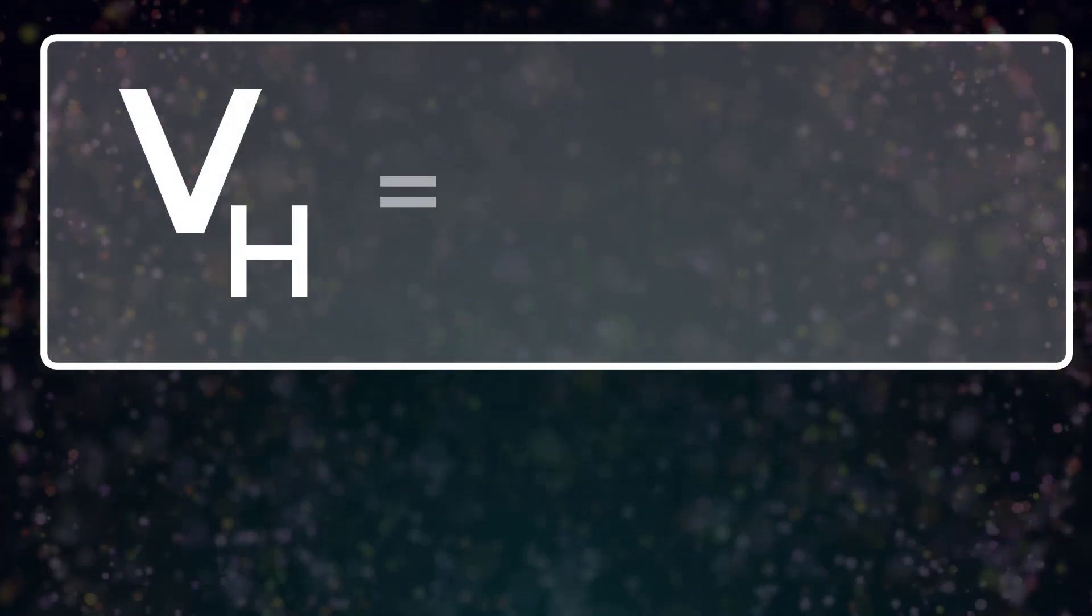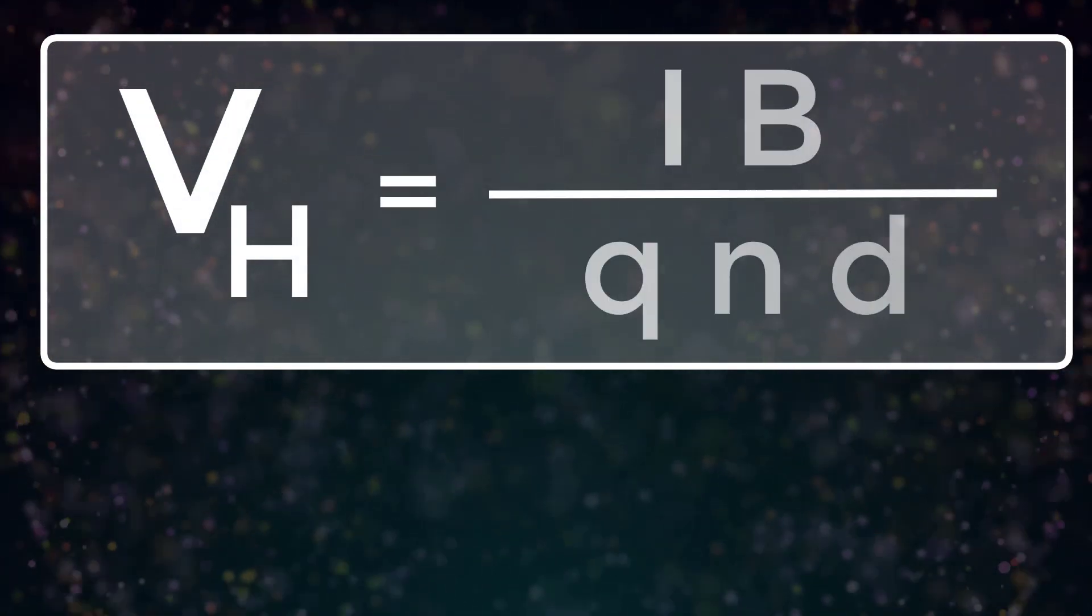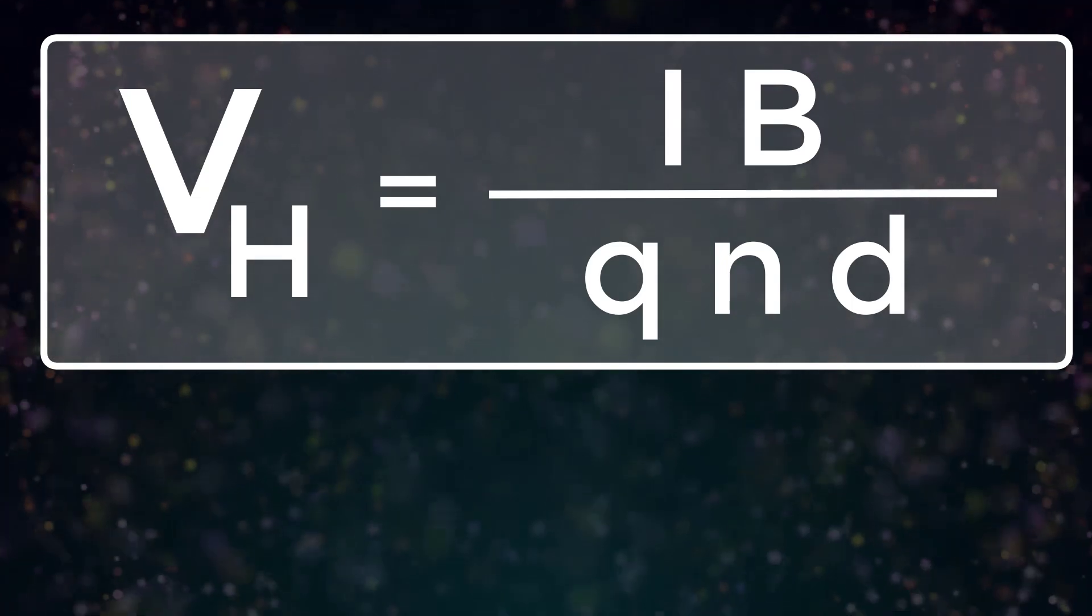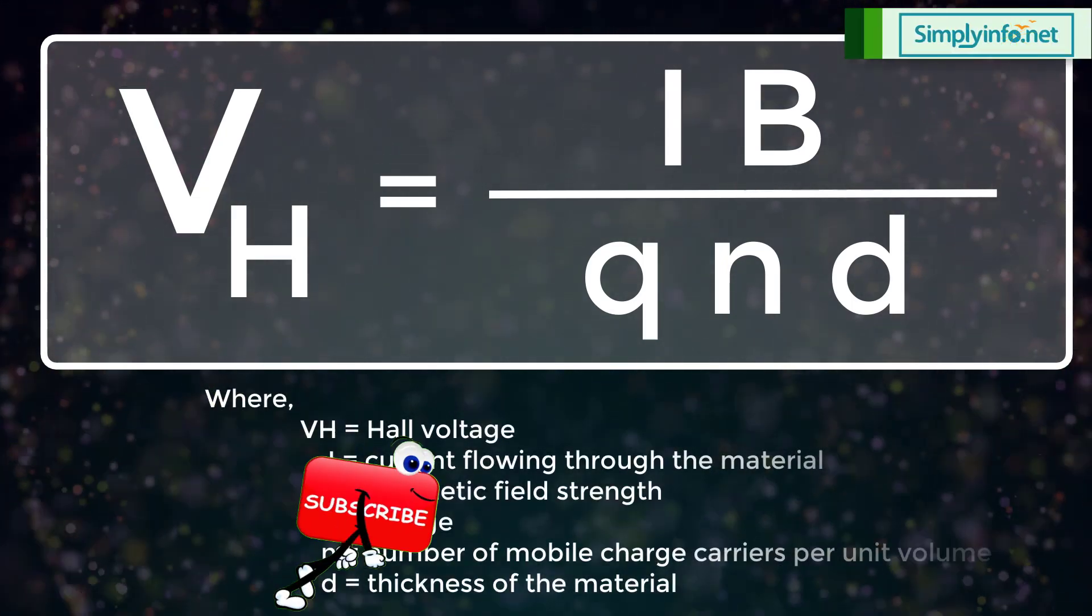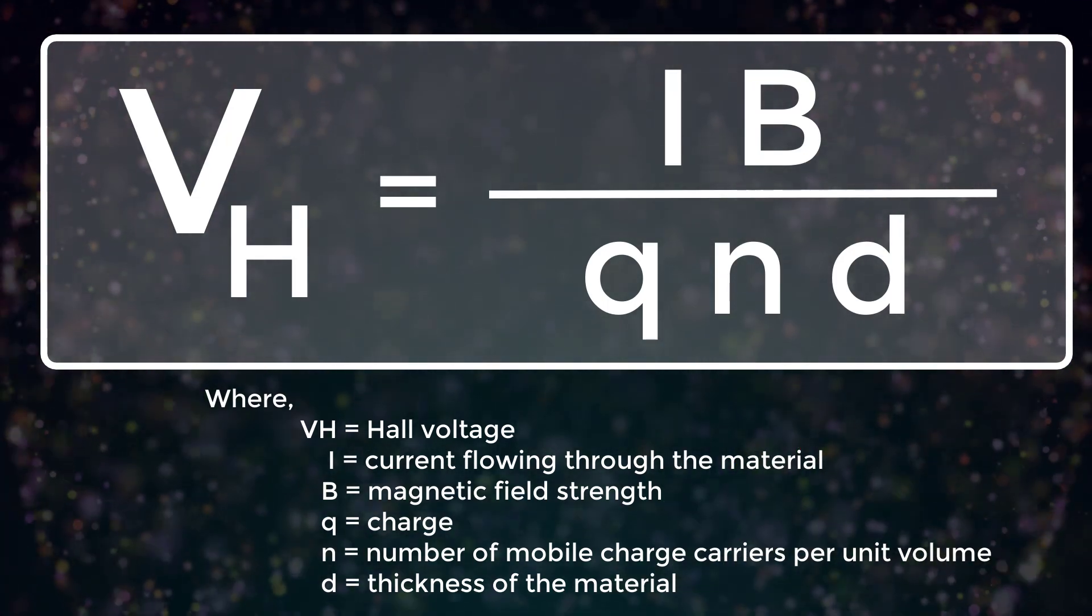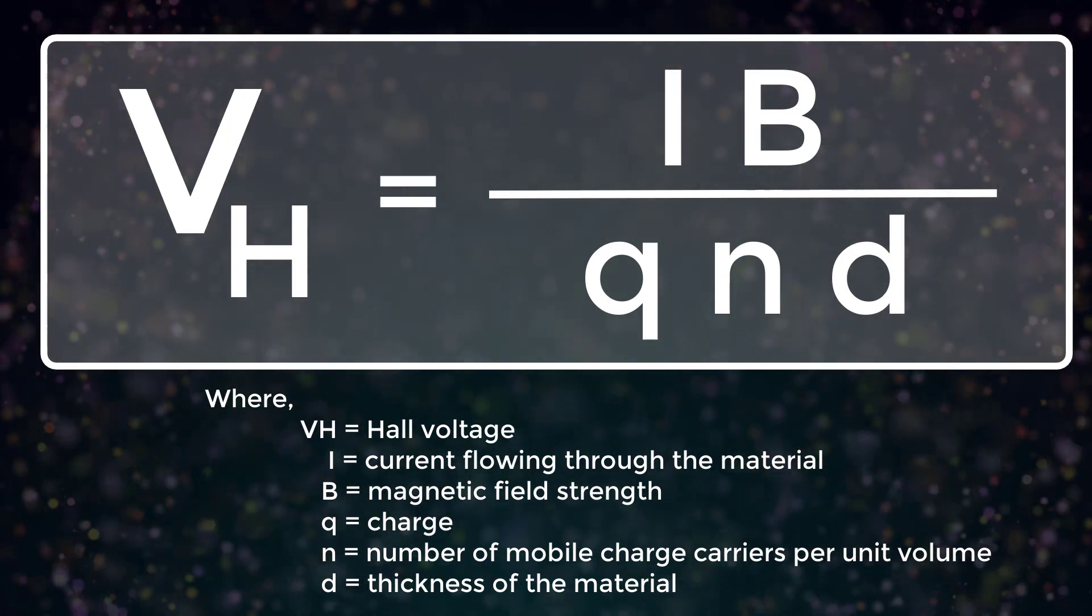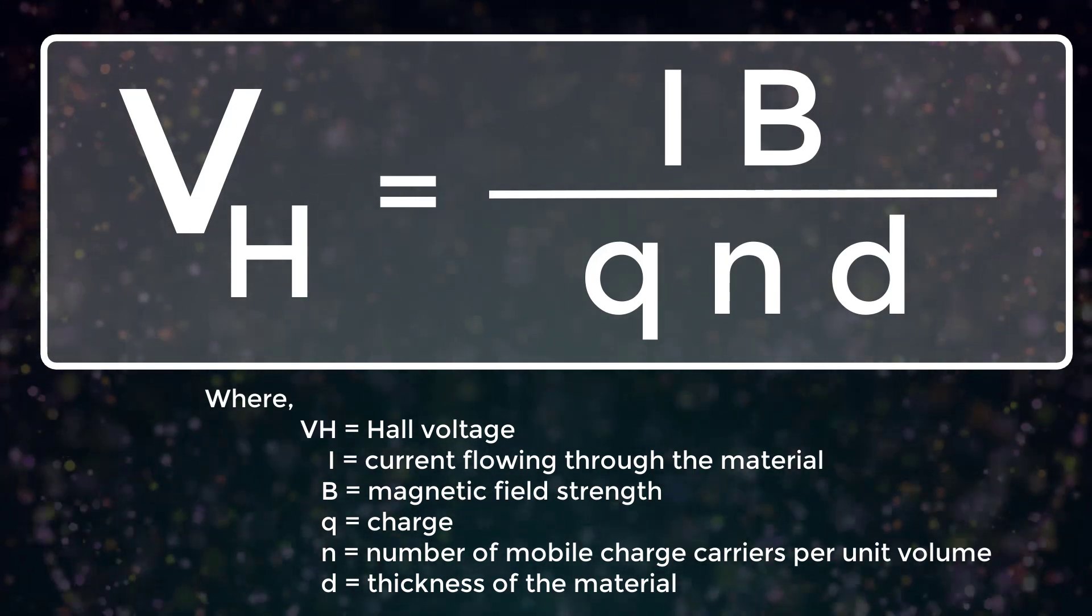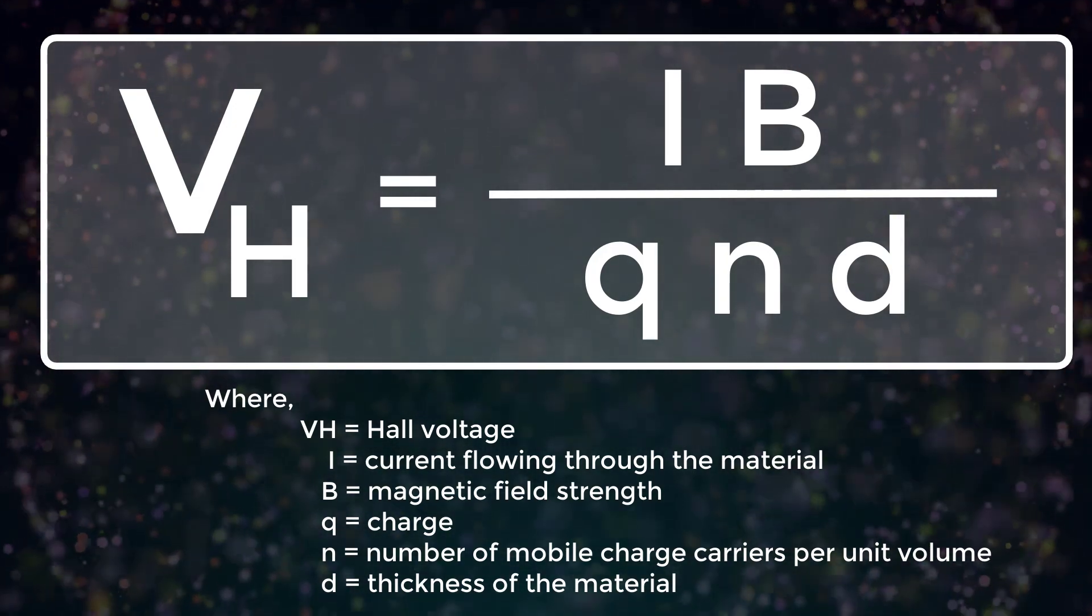Mathematical expression for the Hall voltage is given by Vh equals IB divided by Qnd, where Vh is Hall voltage, I is current flowing through the material, B is magnetic field strength, Q is charge, N is number of mobile charge carriers per unit volume, and D is thickness of the material.